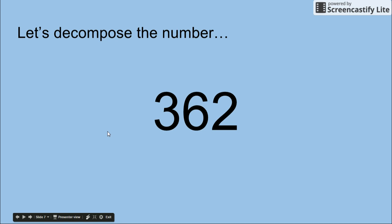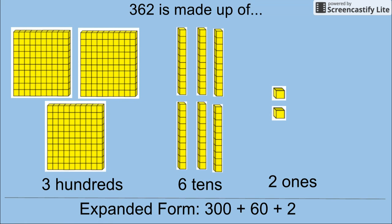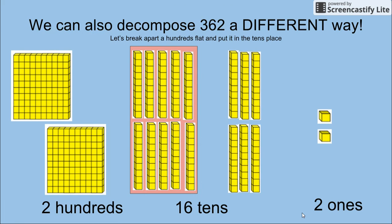So let's decompose the number 362. 362 is made up of three hundreds, six tens, and two ones. So the expanded form would be 300 plus 60 plus 2. This is the most basic understanding of expanded form.